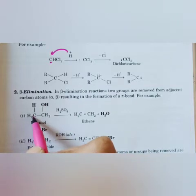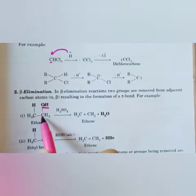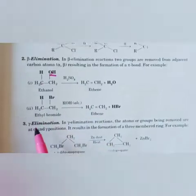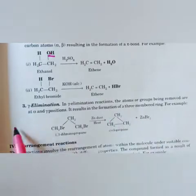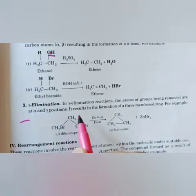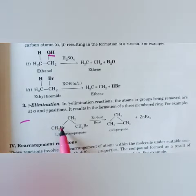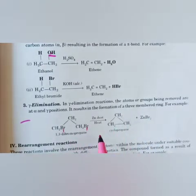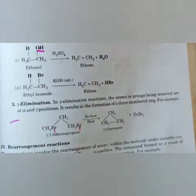In beta elimination, two groups are removed from adjacent carbon atoms. In gamma elimination, atoms or groups are removed from the alpha and gamma positions, resulting in the formation of a three-membered ring. For example, CH2BrCH2CH2Br reacts with zinc to eliminate zinc bromide and form cyclopropane. Please take a screenshot; I will also send these notes to you.